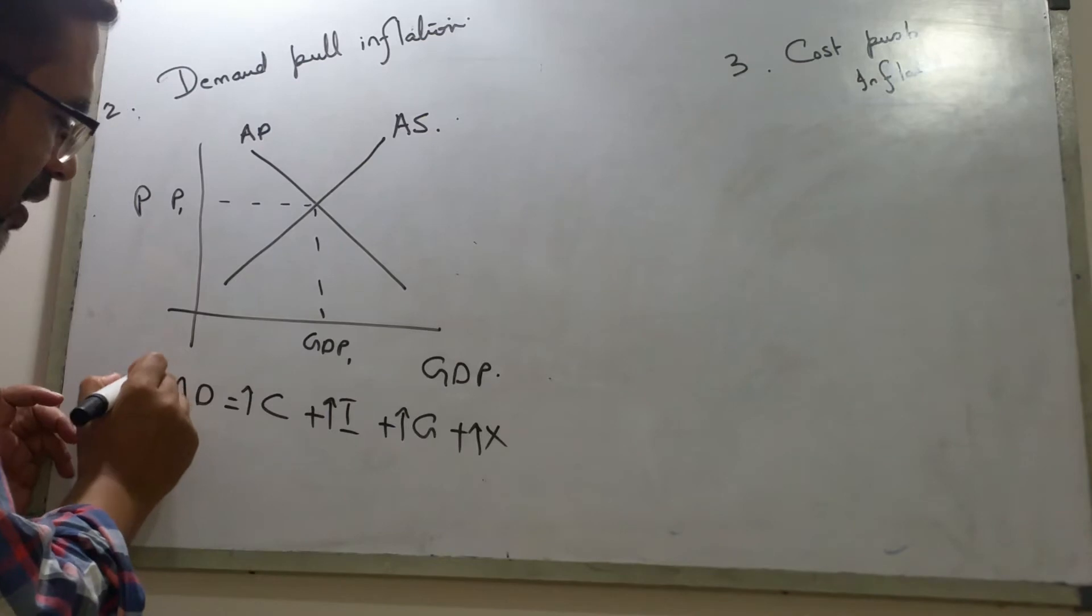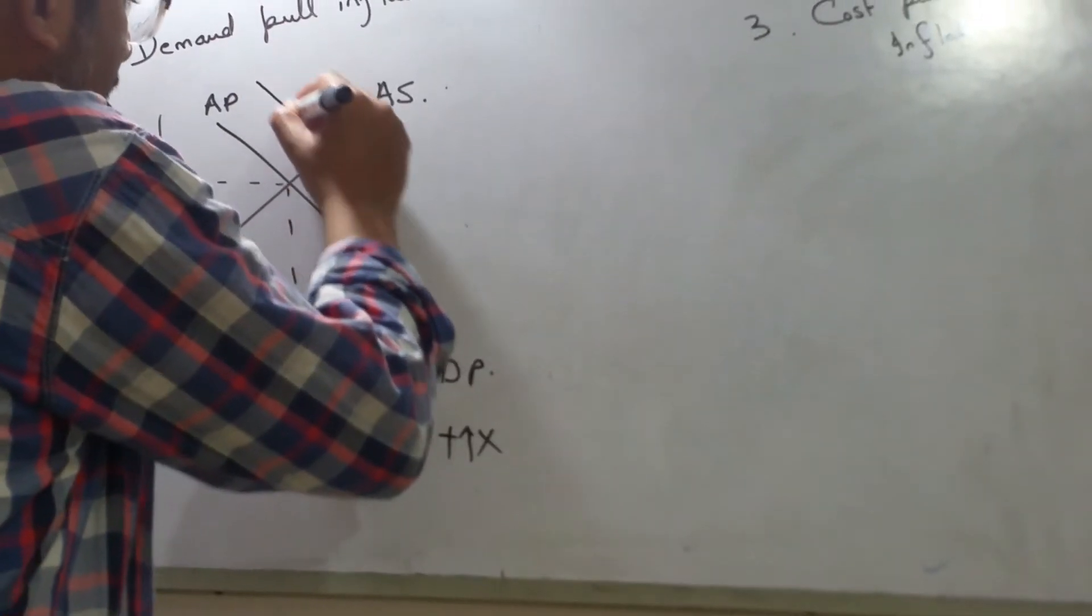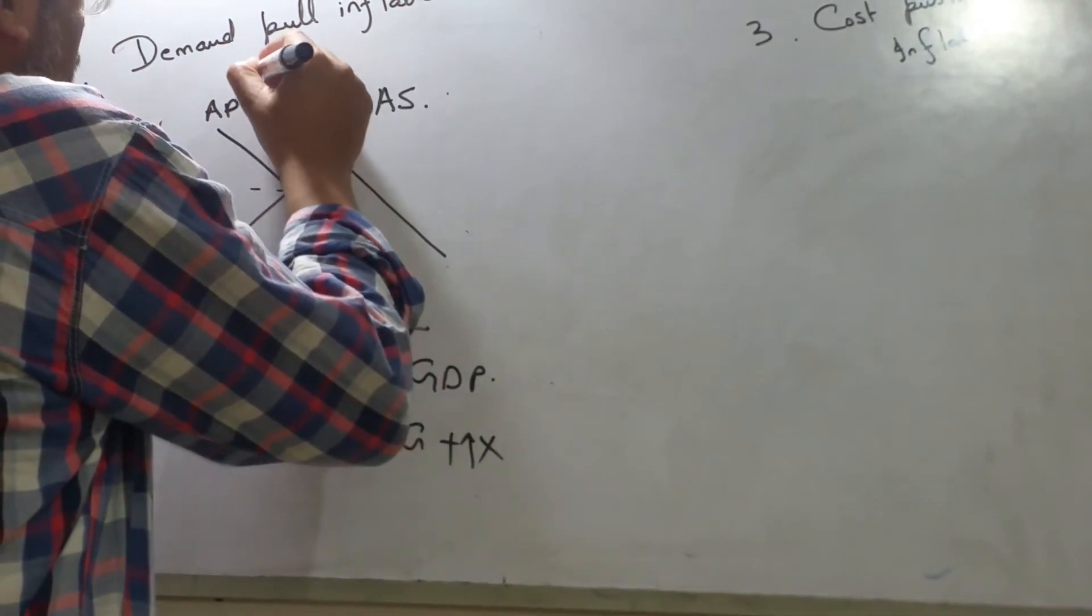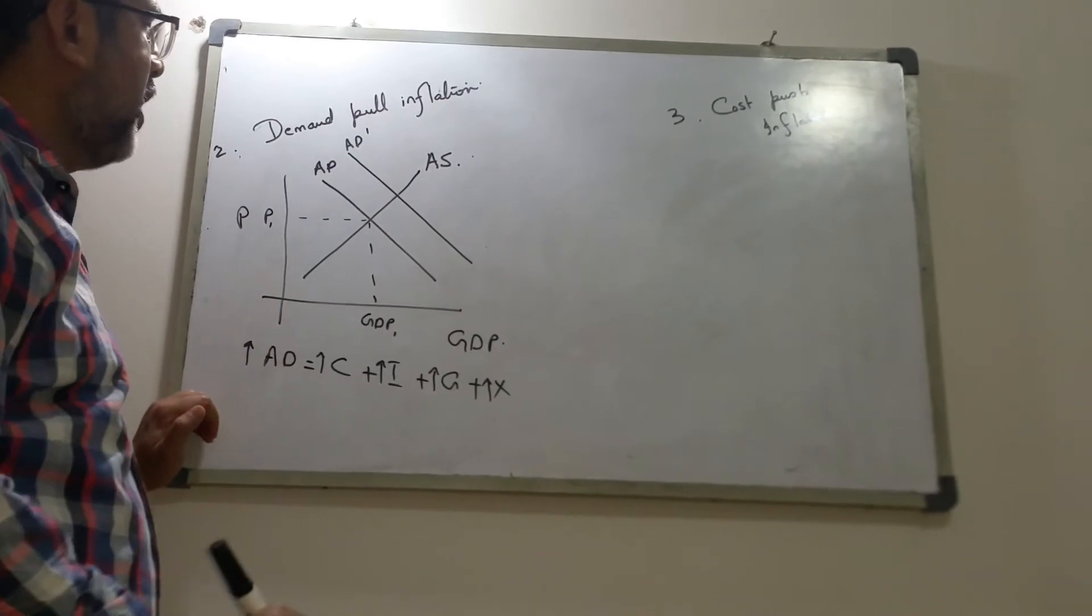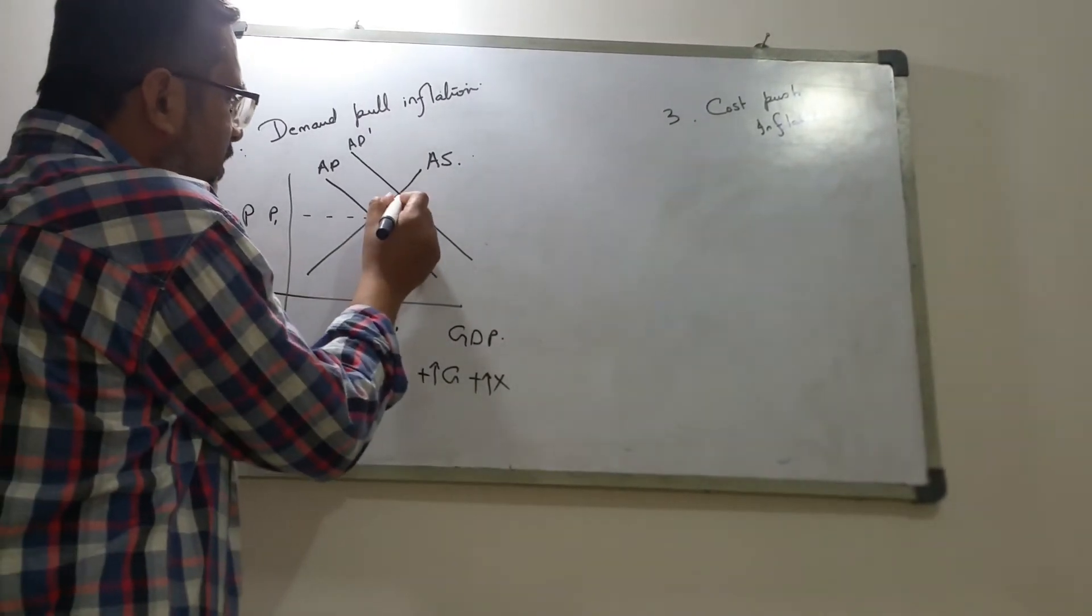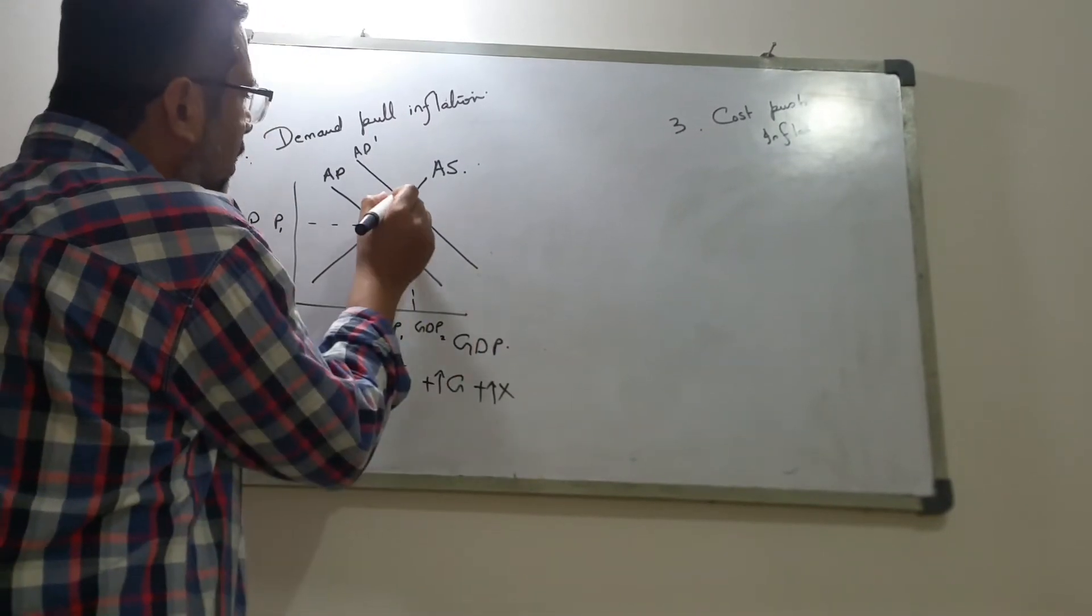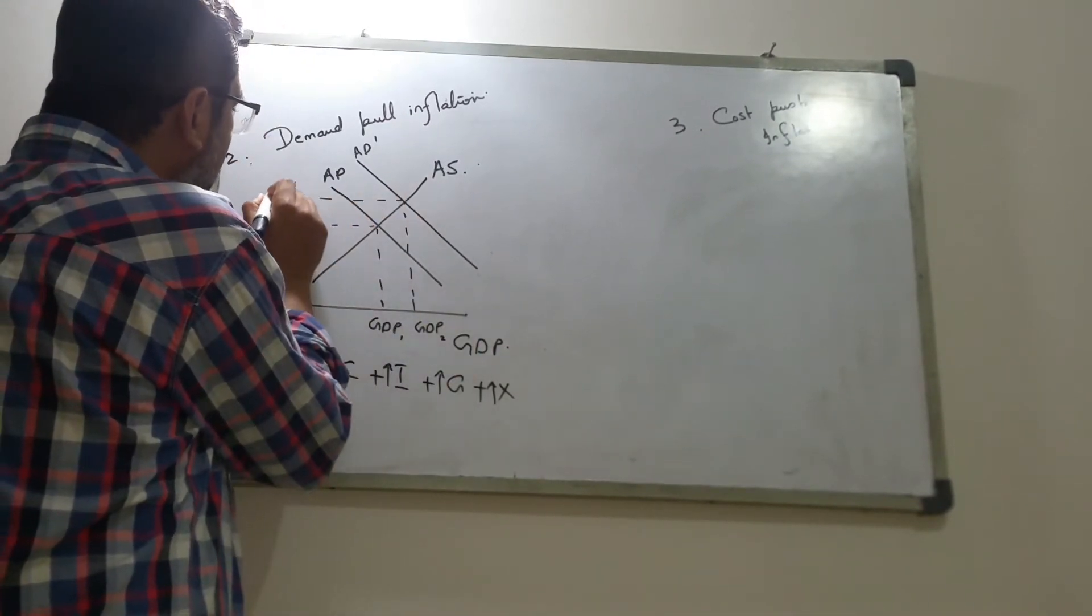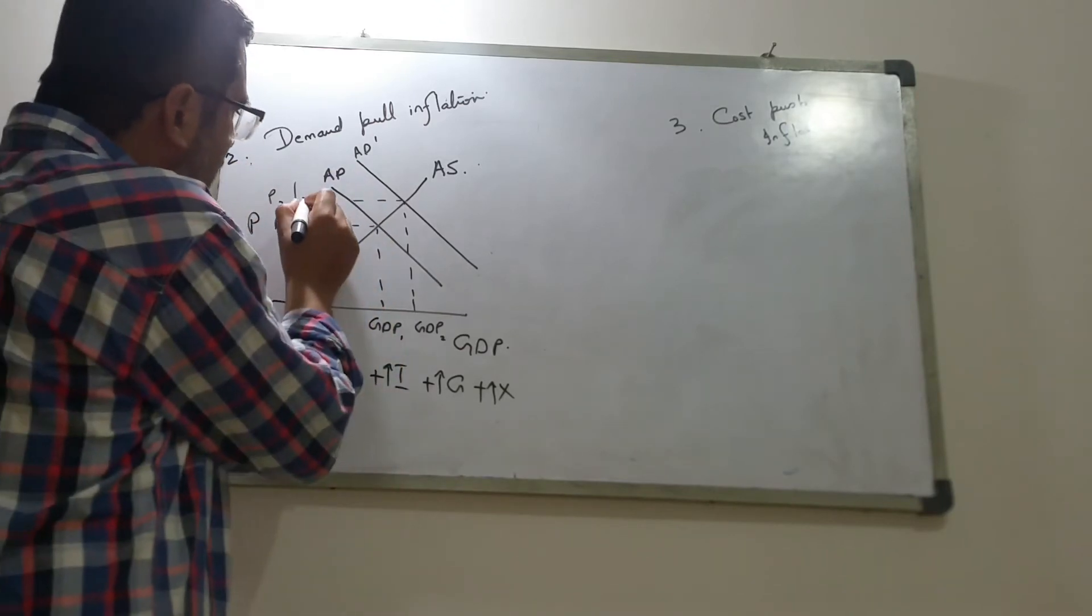And when the aggregate demand rises, this aggregate demand curve rises to AD dash. And here what happens is that you will experience an increase in GDP, which means the economy will expand slightly, but you will also experience an increase in the general price level.